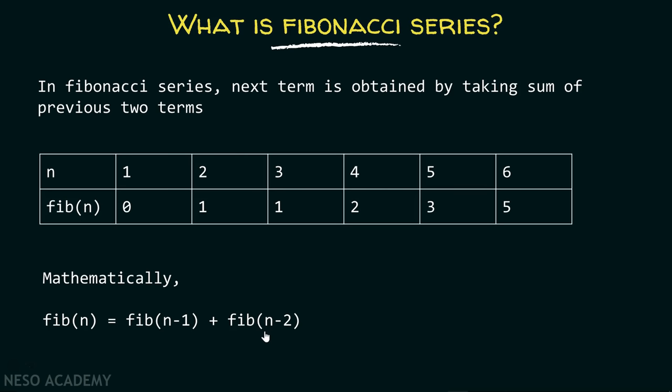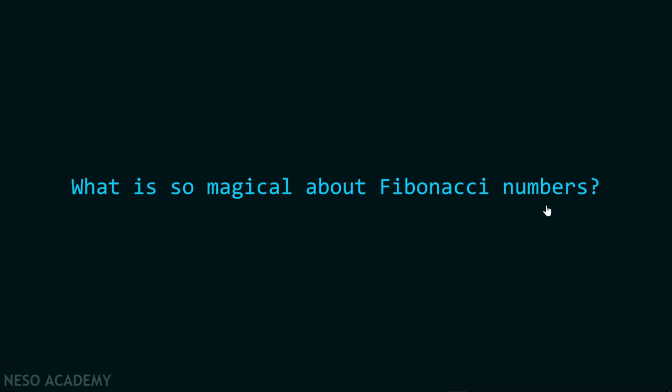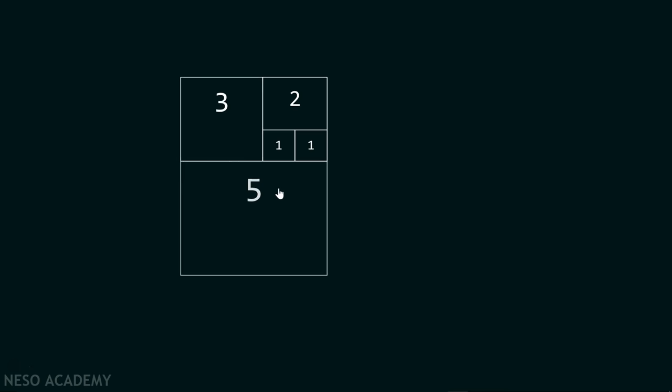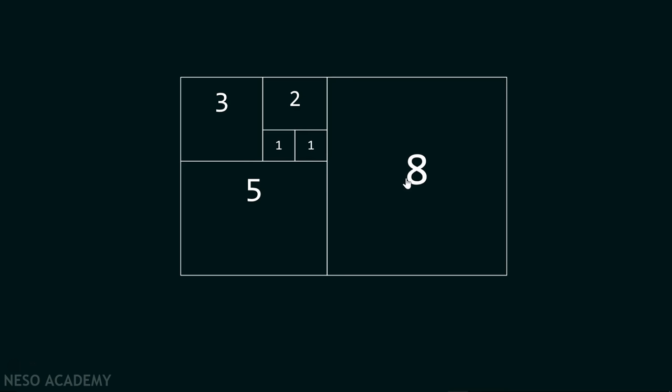What is so magical about Fibonacci numbers? Let's see — suppose we have two 1×1 squares, then a 2×2 square on top, a 3×3 square to the left, a 5×5 square at the bottom, and an 8×8 square. You can see these squares are forming up the Fibonacci series: 1, 1, 2, 3, 5, 8, 13, and so on.